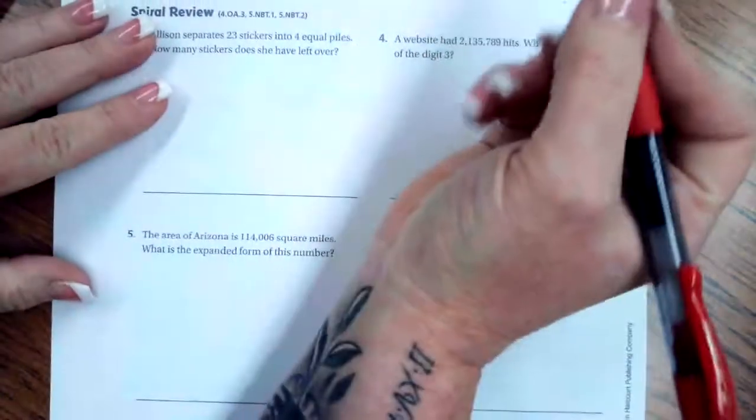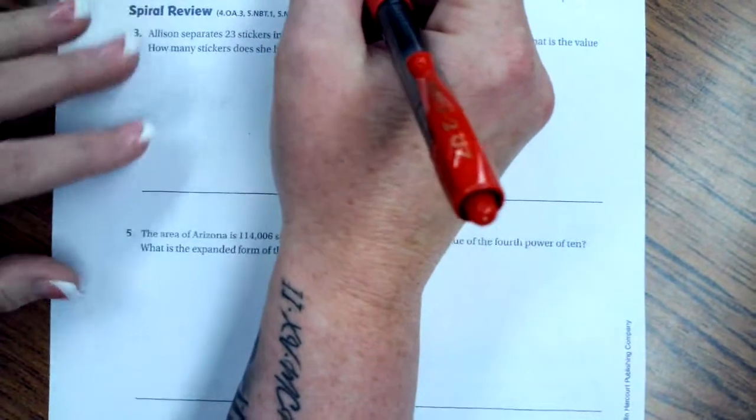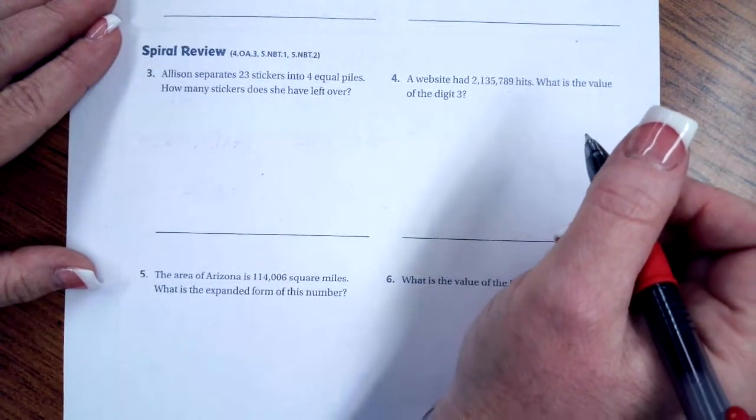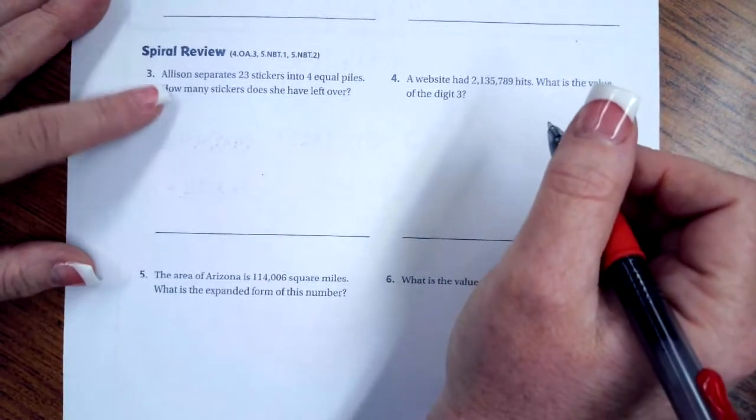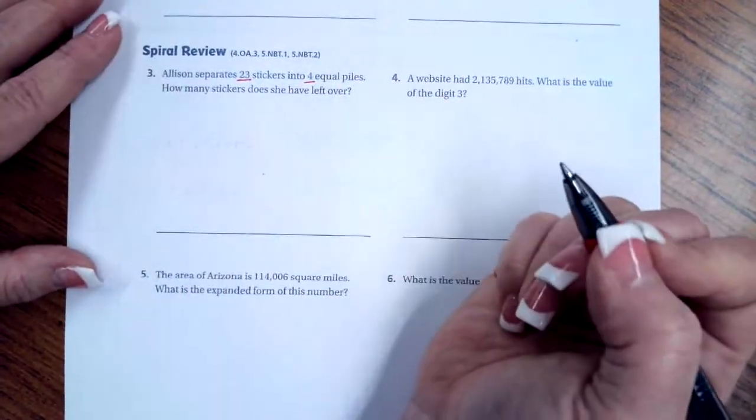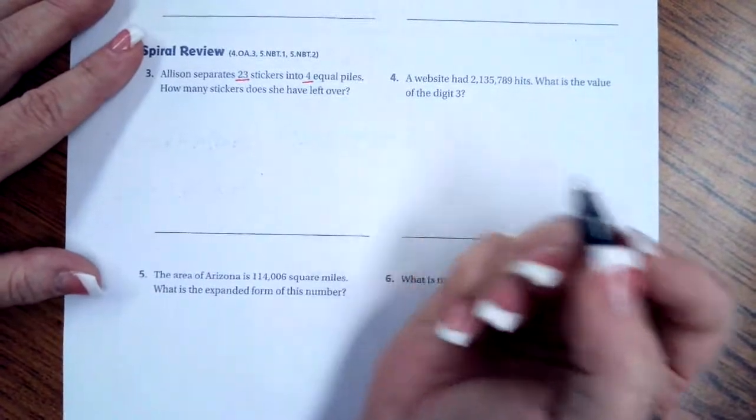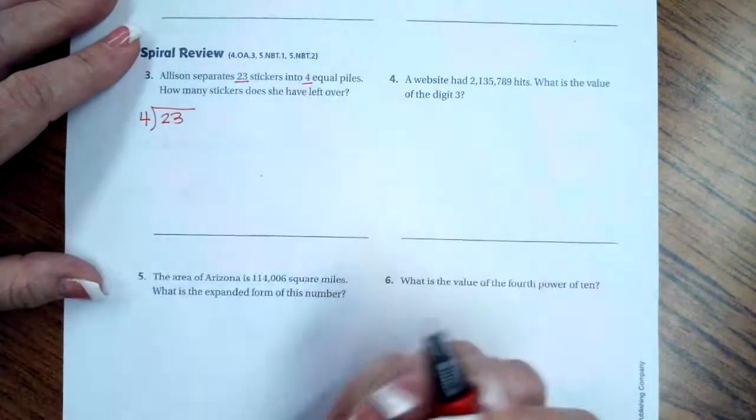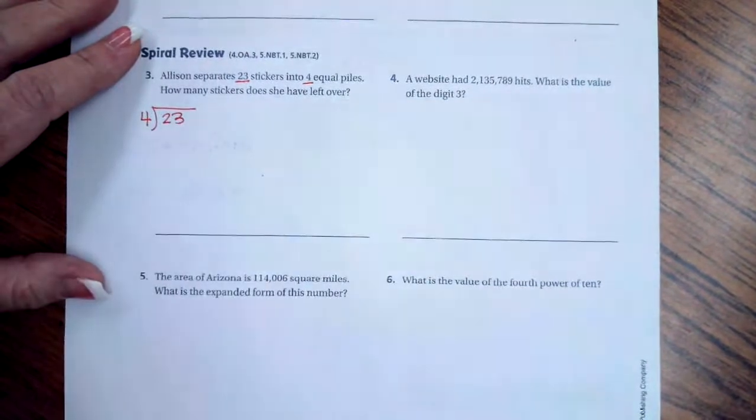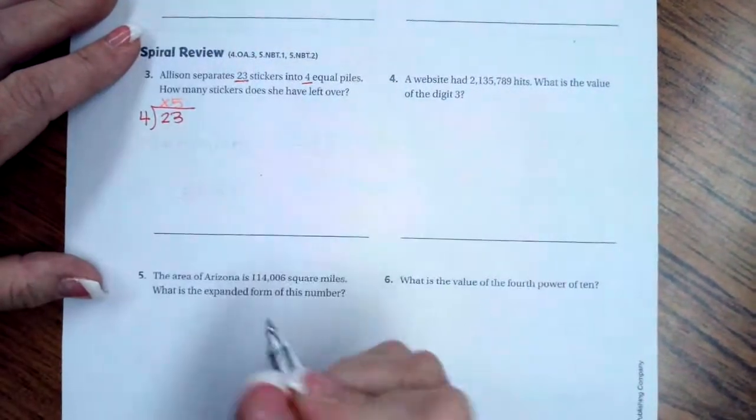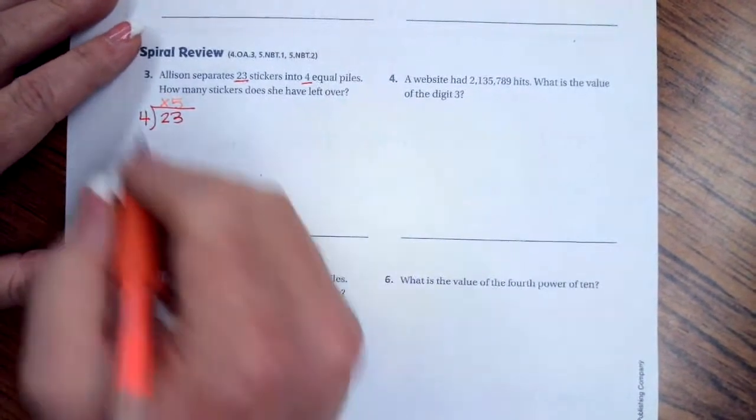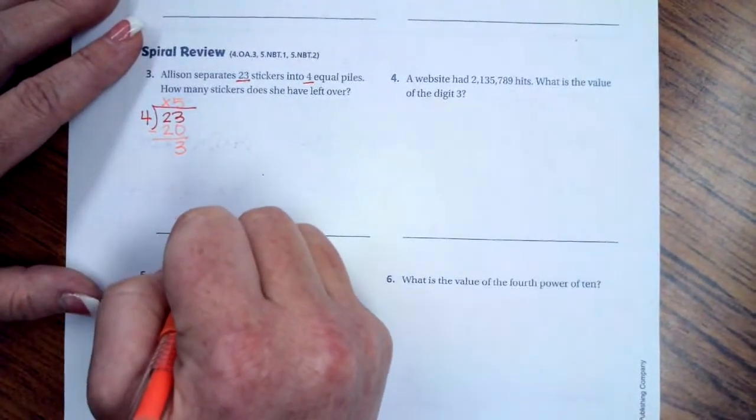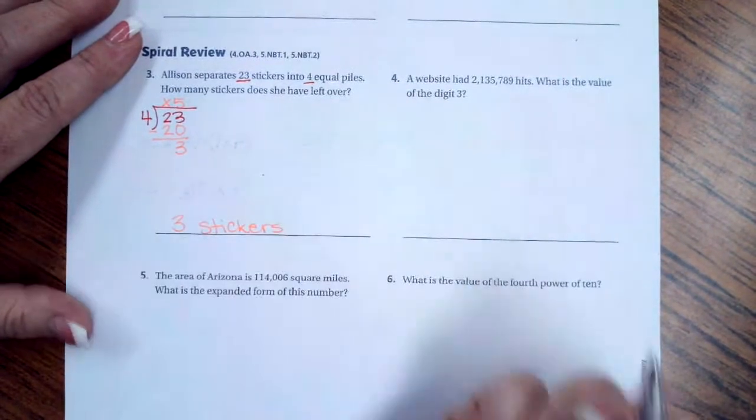It says write an expression that can be using the distributive property that can be used to find the quotient of 36. Nope, that's the lesson check. I'm not doing that. Sorry about that. Spiral review. Allison separates 23 stickers into 4 equal piles. How many stickers will she have left over? So 23 divided by 4. So 4 goes into 20 five times. I'm going to put a placeholder X over the 2 because 4 doesn't go into 2. 5 times 4 is 20. Subtract. I have 3 left over. 3 stickers is what she will have left over. A remainder is what they were looking for.